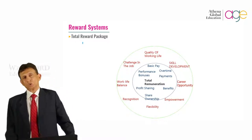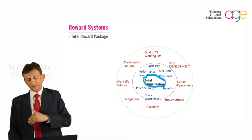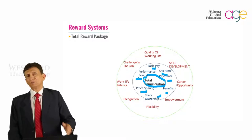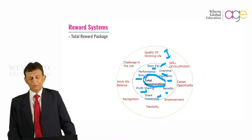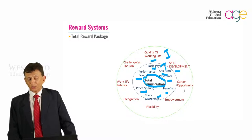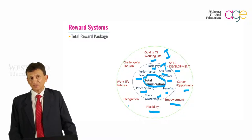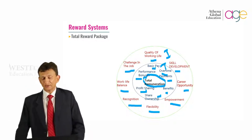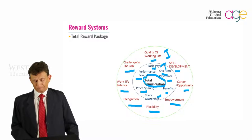In terms of the total reward package, total remuneration consists of tangibles and intangibles. Tangibles include basic pay, overtime, other payments, benefits, share ownership, profit sharing, and performance bonuses. Intangibles include quality of working life, skill development opportunities, career opportunities, empowerment, flexibility in schedules, recognition, work-life balance to balance professional and personal life, and the challenge of the job itself. All these intangibles represent a form of intangible reward for the employee.